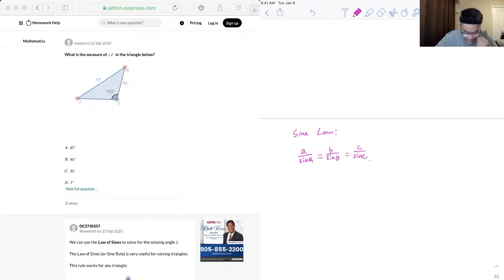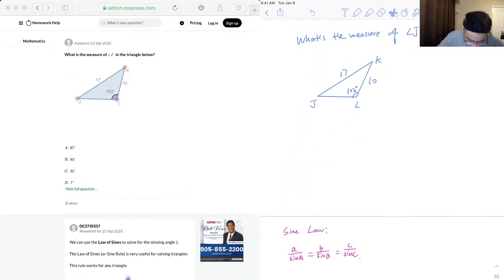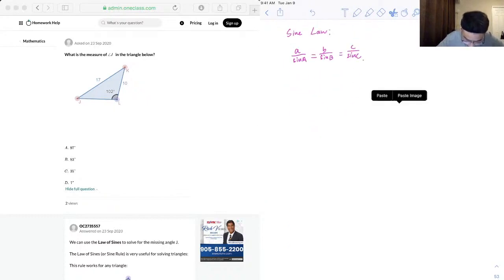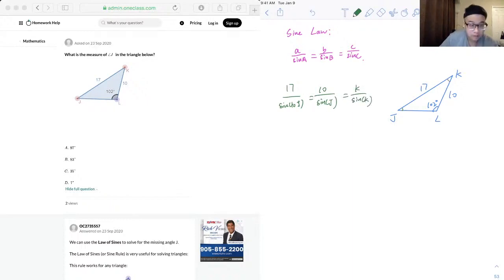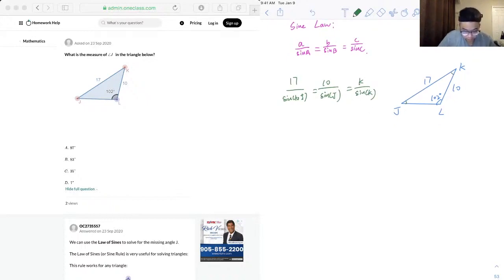And yeah, so by knowing this let's go back to our given problem. Let me just copy paste the graph. All right. So for here if we want to apply this sine law, it'll be something look like this: so 17 over sine 102, which is equal to 10 over sine J, which is right here, which is also equal to k over sine k. Right. And for now we don't need to deal with k over sine k because it's not useful to us.